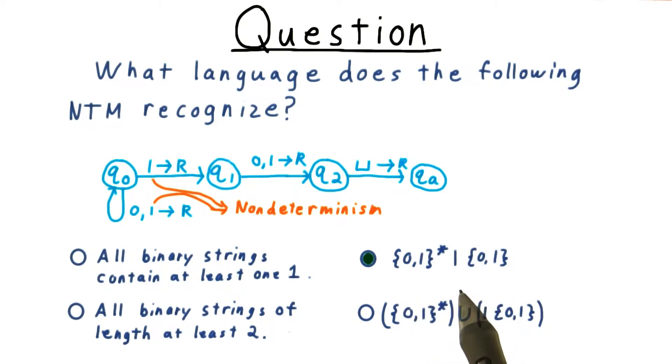Remember that in order for the machine to accept a string, it just has to accept it in any branch of its computation.